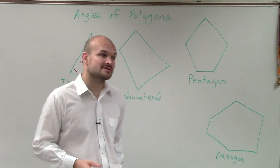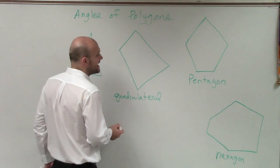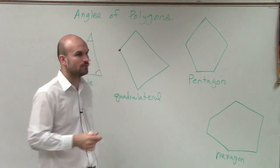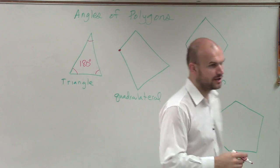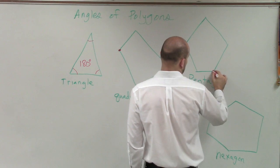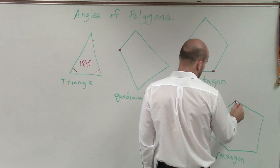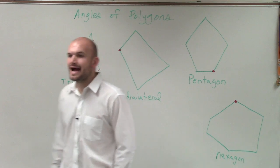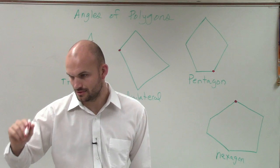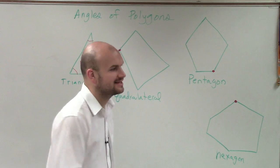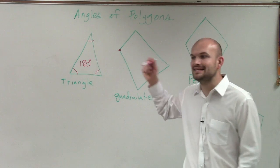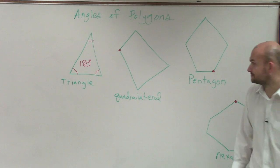So the way that we do this is we create what we call a diagonal. We pick a vertex on one of the sides of the polygon - it doesn't matter where you pick it. You can pick one anywhere. And from that vertex, you're going to draw a line to each and every other vertex.